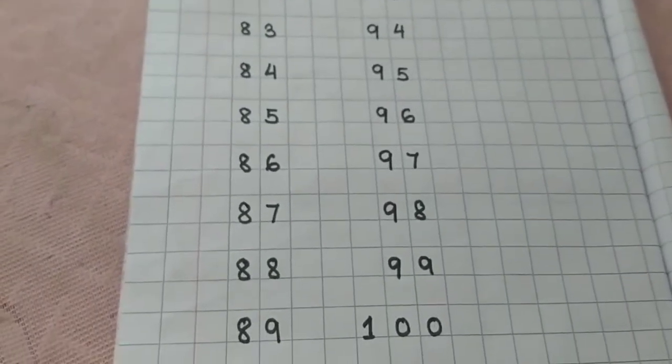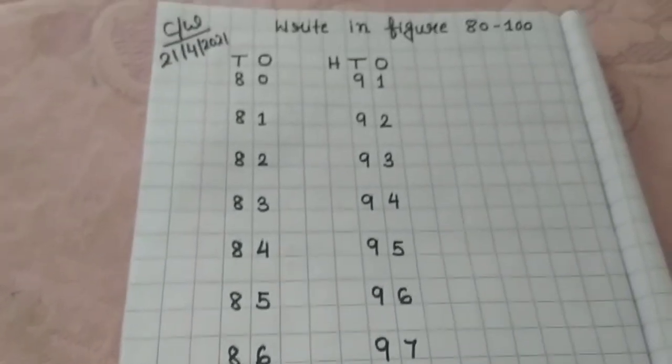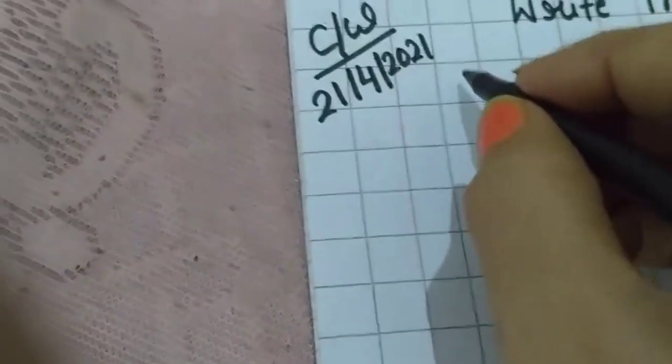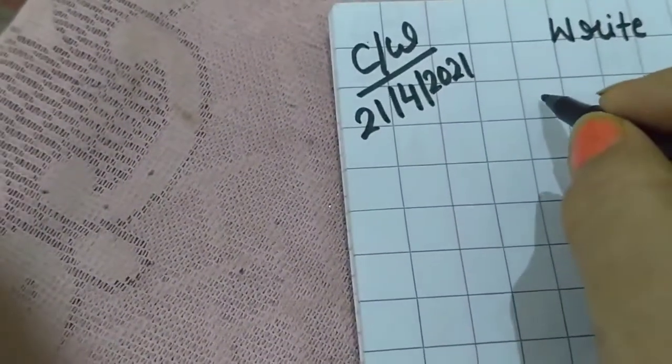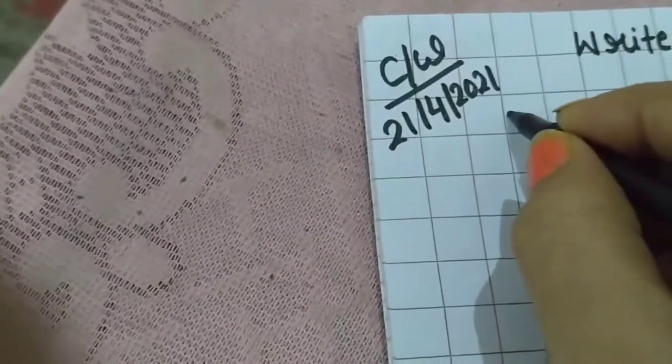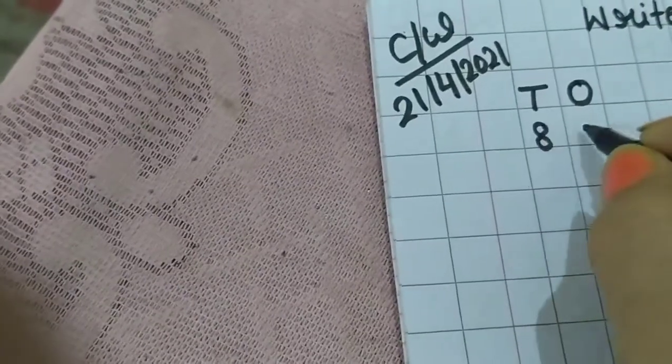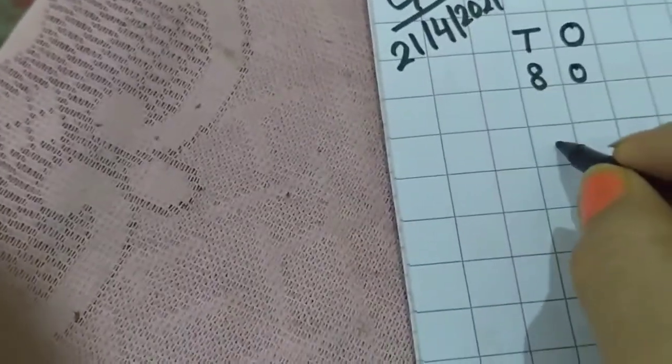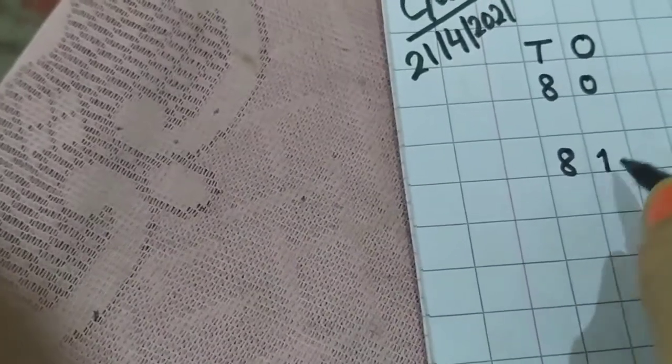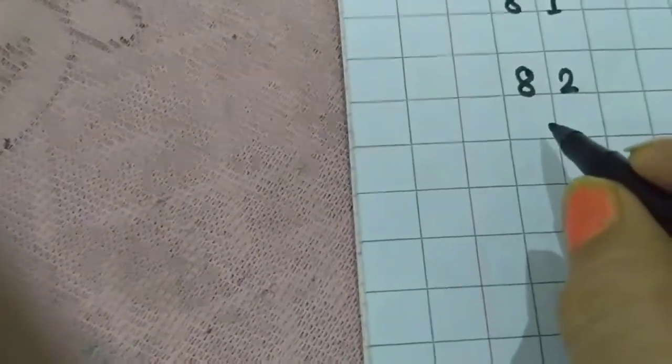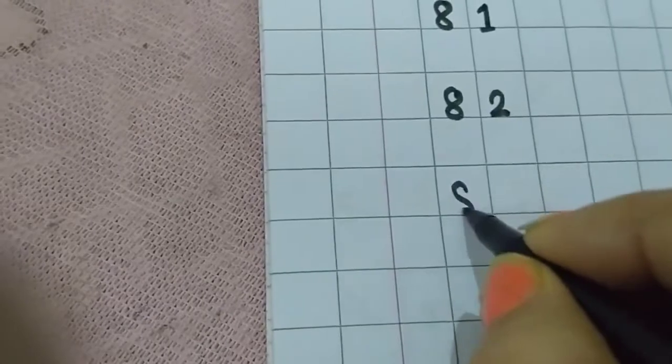Just everybody, please follow me. You can start from here also. First, you have to write Ones and Tens. Okay. Keep 1 box gap and then you have to write 81. Then 82. Again, you have to keep 1 box gap. Then 83.